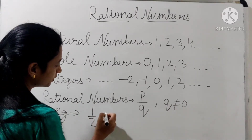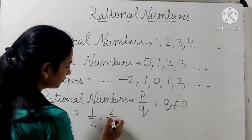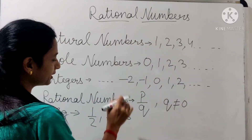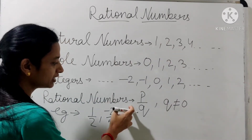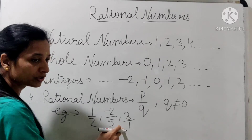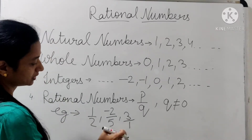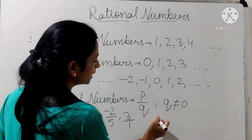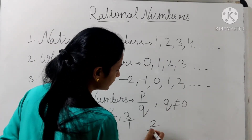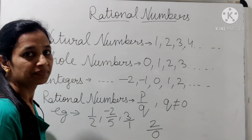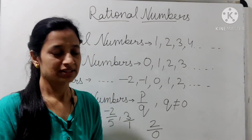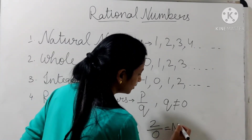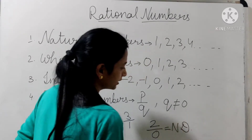Example लेते हैं. Like 1 by 2, minus 2 by 5, और 3 — जो की एक natural number है, वो भी rational number है, क्योंकि 3 by 1 कर दो, तो यह हमारा rational number बन जाएगा. क्यों 0 denominator नहीं होना चाहिए? अगर हमारा denominator 0 हो जाए, suppose 2 by 0, तो यह not defined हो जाएगा. तो इसलिए कभी भी denominator 0 नहीं देते हैं.